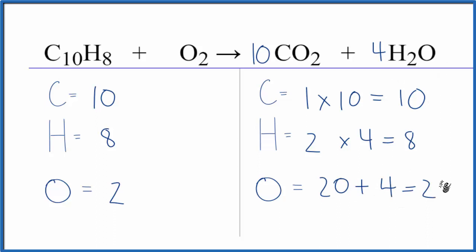4. We have 24, which is great because now all we need to do is take and put a coefficient of 12 in front of the O2. 2 times 12, that equals 24. And we're done. This equation is balanced.